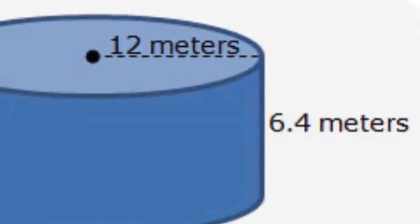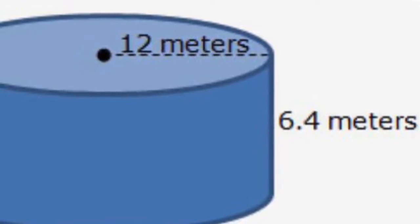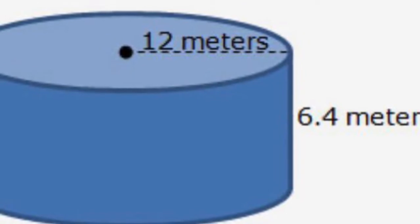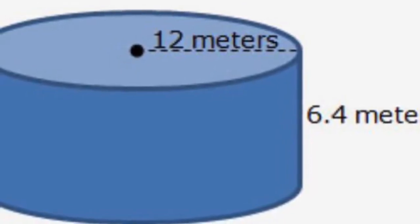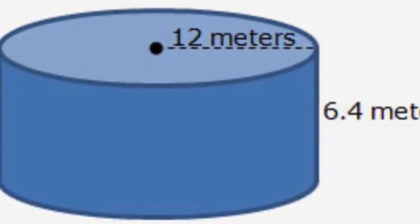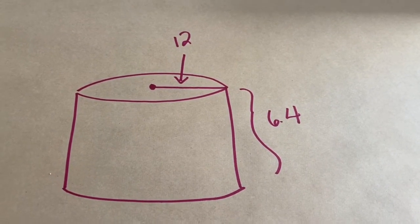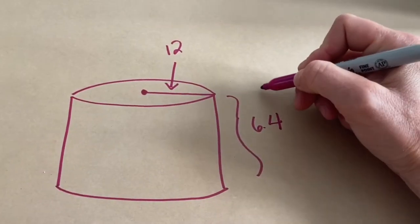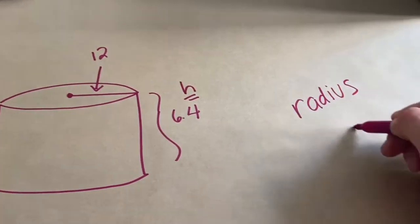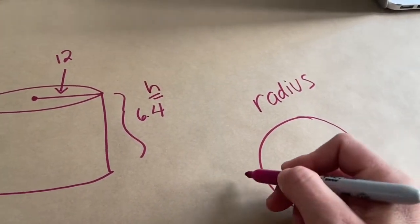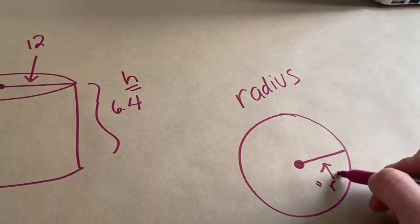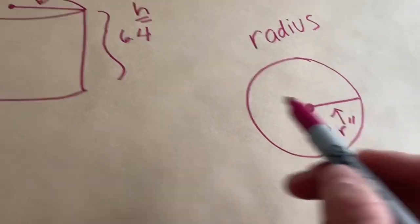It's a cylinder. I can see the height is 6.4 — that's how tall it is. And the radius, the R, is 12. Radius just means half of the circle at the top of the cylinder. I've drawn the cylinder on my table. The height is 6.4. The radius — if you have a circle, it's not all the way across, it's just from the middle across. That's what radius or R means. So in my cylinder, the R would be 12.